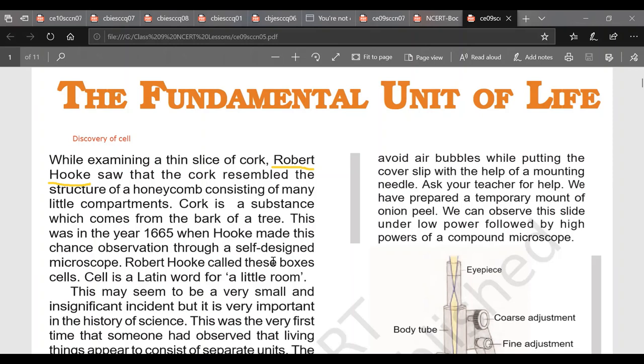Till 1665 nobody knew what organisms are made up of. They knew about organs but what organs are made up of nobody knew. Robert Hooke was inquisitive. He wanted to know what organisms are made up of. So he designed his own microscope and he cut very very thin sections of the slices of bark of the tree which we call cork.